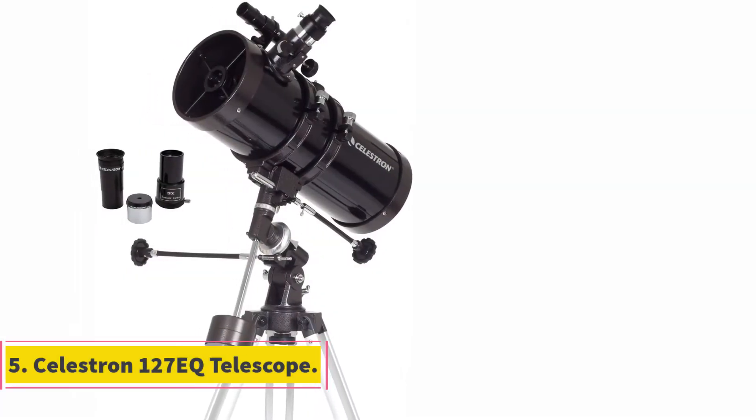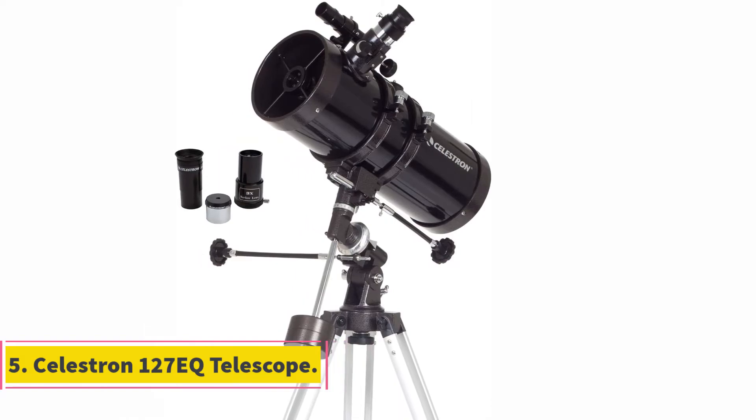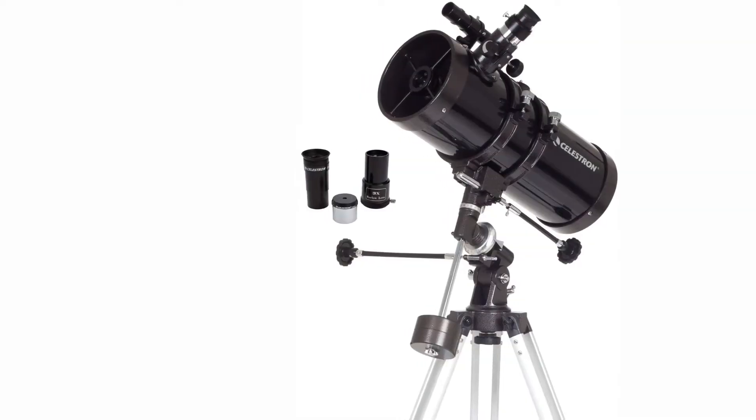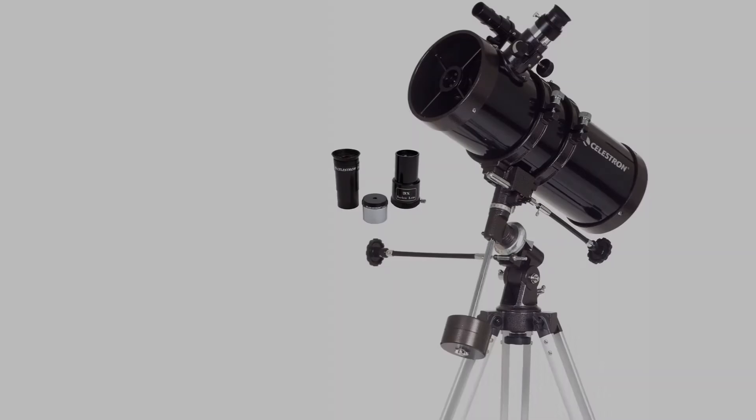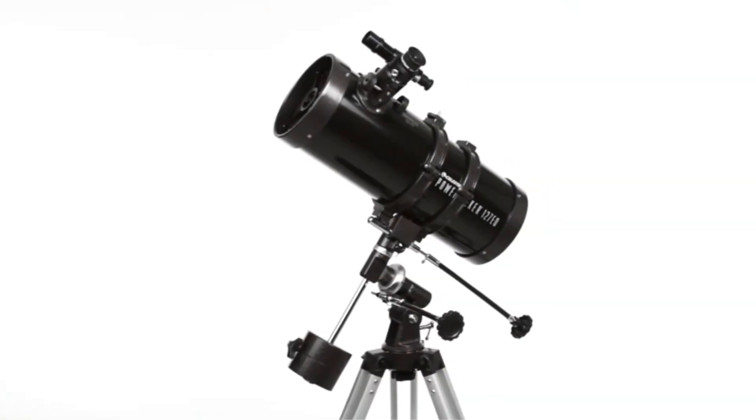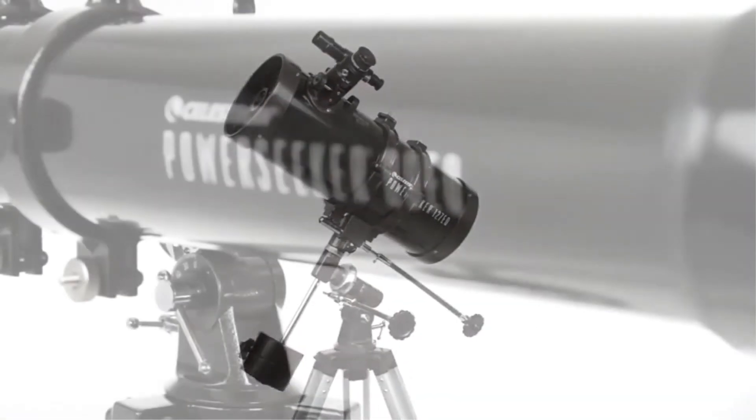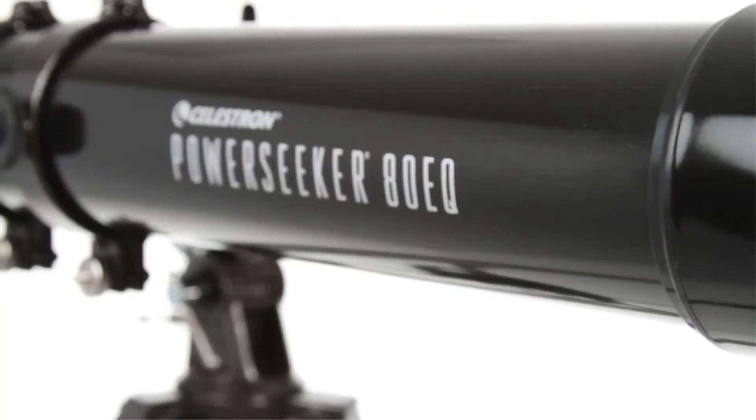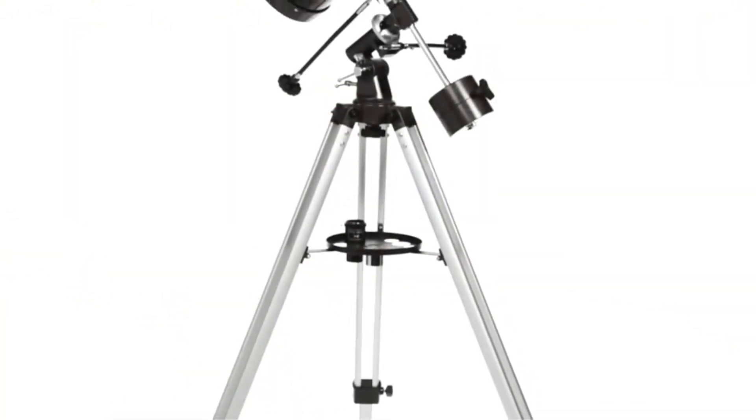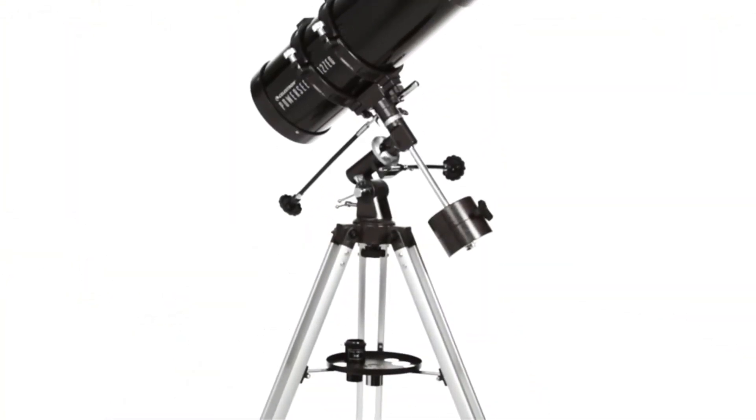At number 5, Celestron PowerSeeker Telescope. Second to last, we feature the Celestron PowerSeeker. This unit is compact and easy to store, making it a good option for people who need to frequently transport their telescope. The knobs are also especially made to be easy to use and manipulate.